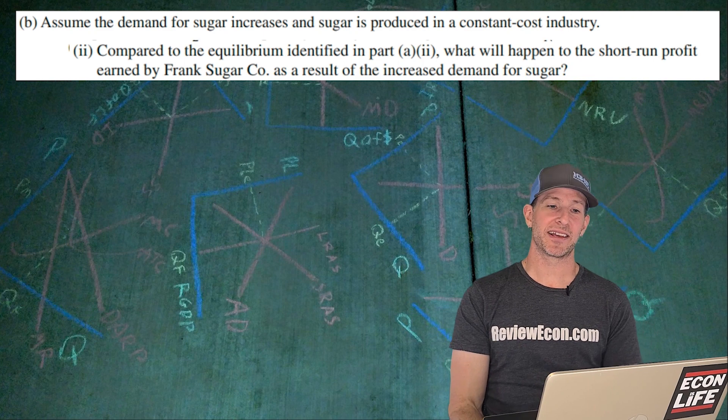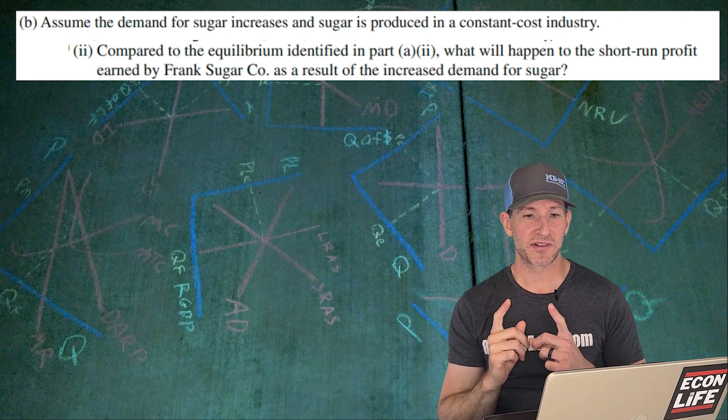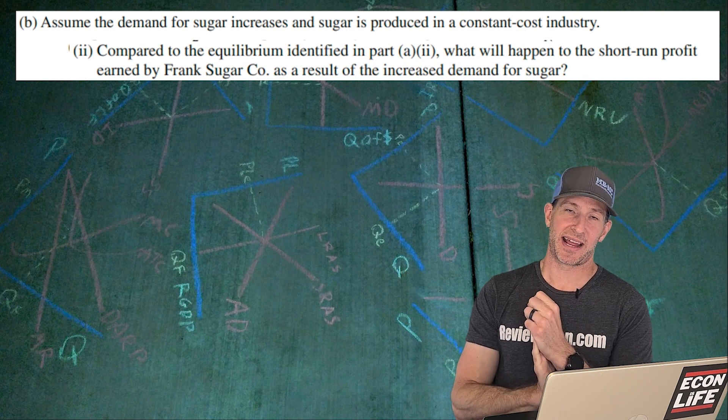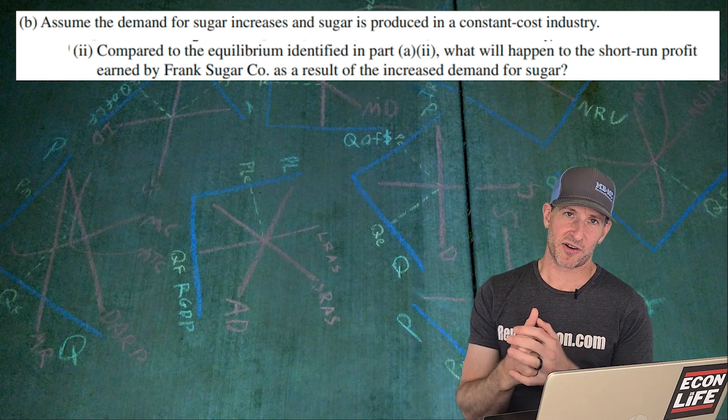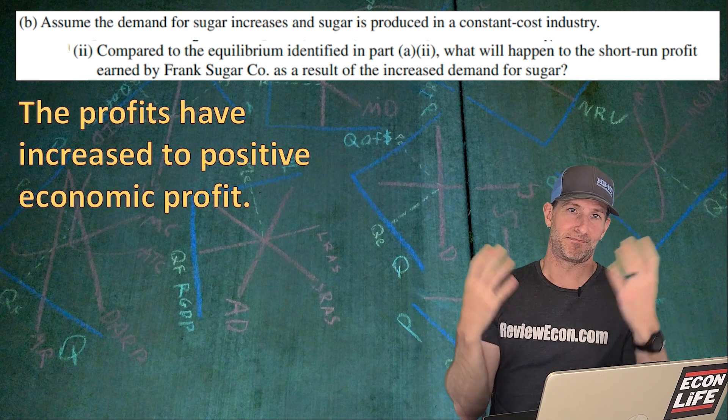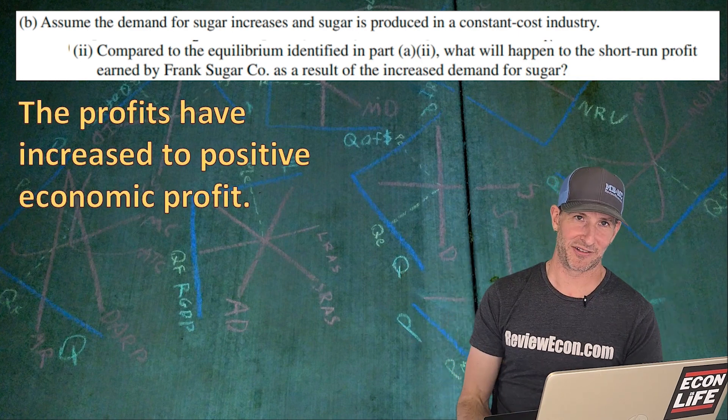Compared to the equilibrium identified in Part A, what will happen to the short-run profit earned by Frank Sugar Company as a result of the increased demand? Remember, they were breaking even or earning zero economic profits, and now the profits have increased to positive. I believe just saying increase is going to be just fine.